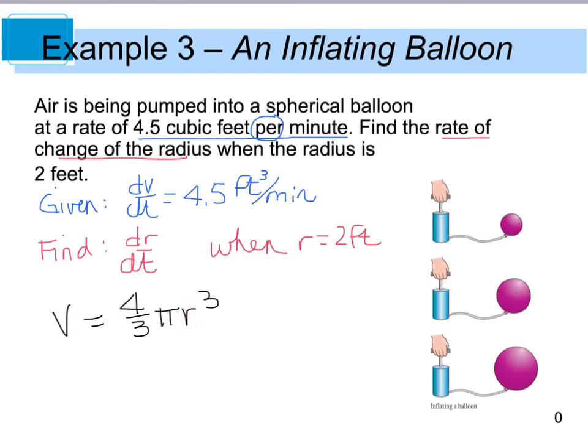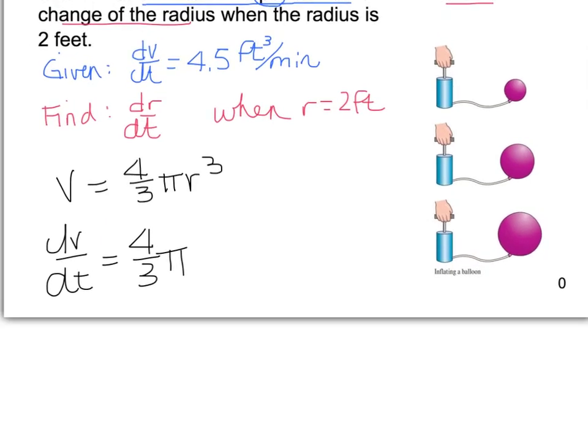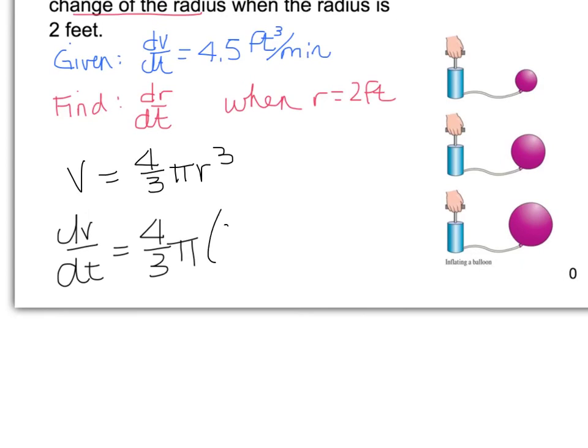Now if I take the derivative, or dV/dt, we get 4/3 pi as a constant, times the derivative of my r cubed value, which is going to be 3r squared dr/dt.